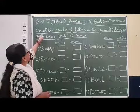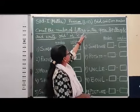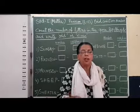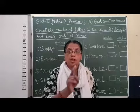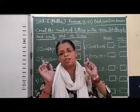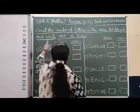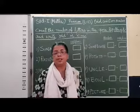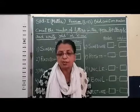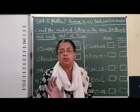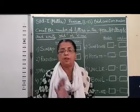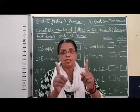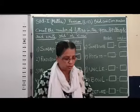What is given? Count the number of letters in the given spelling. Some spellings are given. What you have to do? You have to count the letters used in those spellings and then write odd or even. After finding out the number, you have to write whether it is an odd or even number. So let's start.